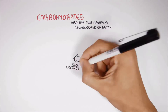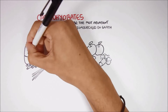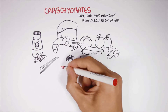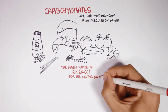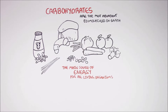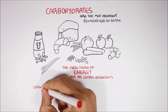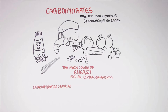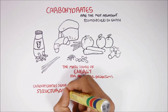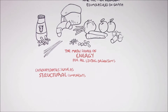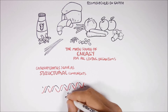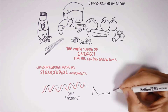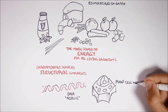Carbohydrates are the most abundant biomolecules on Earth. They are found everywhere. Carbohydrates are a major source of energy for all living organisms, such as animals and plants. But they are not only important for energy — carbohydrates also serve as important structural components. For example, DNA contains the carbohydrate ribose, and the plant cell wall is made up of the carbohydrate cellulose.